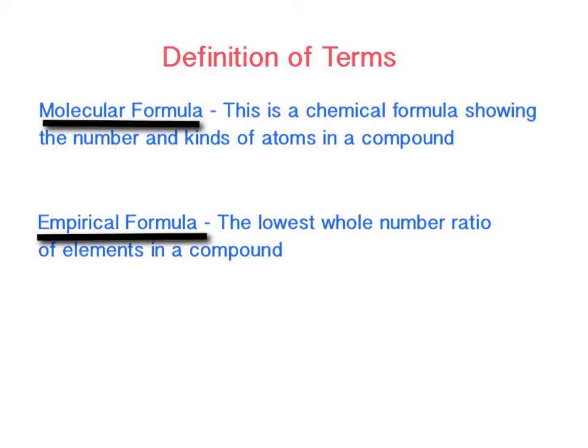So here's a definition for molecular and empirical formulas. A molecular formula is a chemical formula showing the number and kinds of atoms in a compound, and that may look something like this, C4H10, or it may look like C8H20. It tells how many of each type of element are in the compound. But an empirical formula is the lowest whole number ratio of the elements in a compound, and actually both of these would have the same empirical formula, because you could reduce them down to the ratios, the lowest whole number ratio, and that would be C2H5 would be the empirical formula for both of those up above.